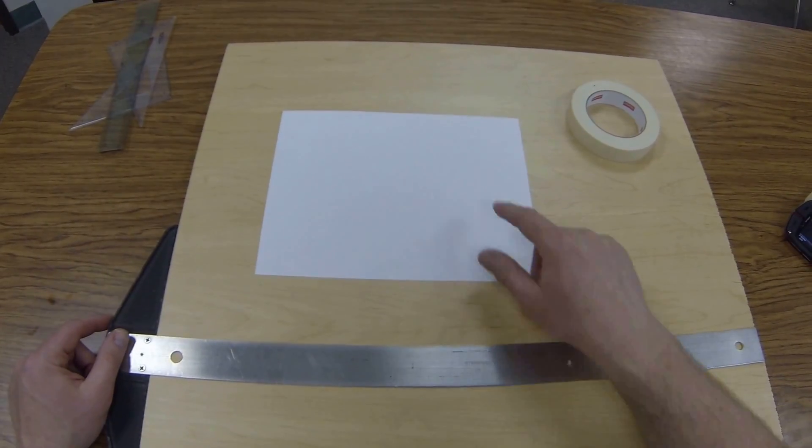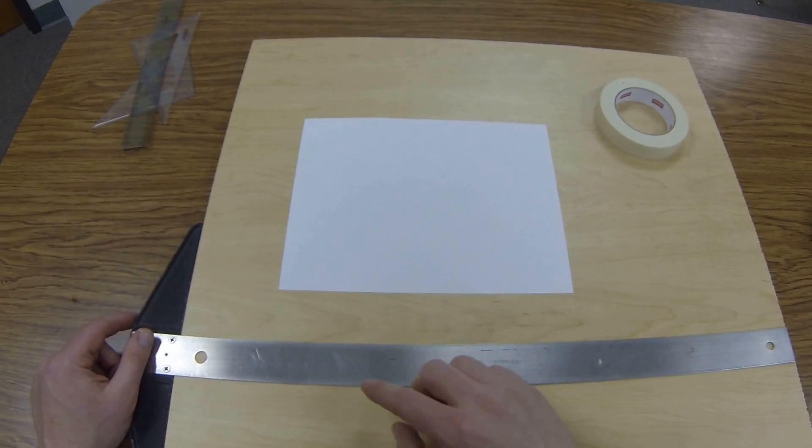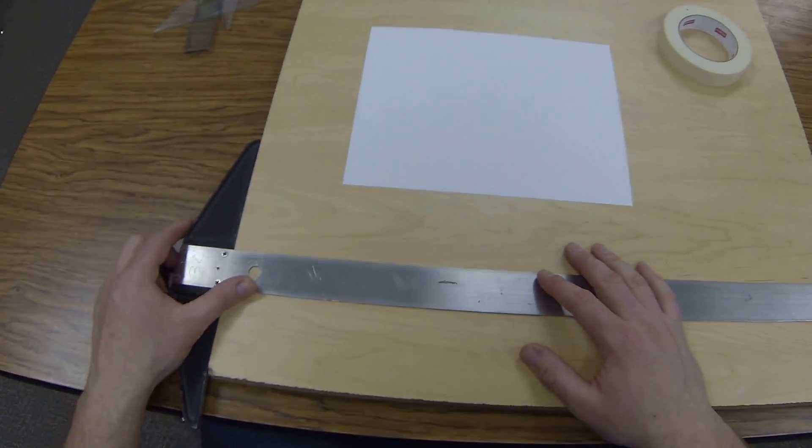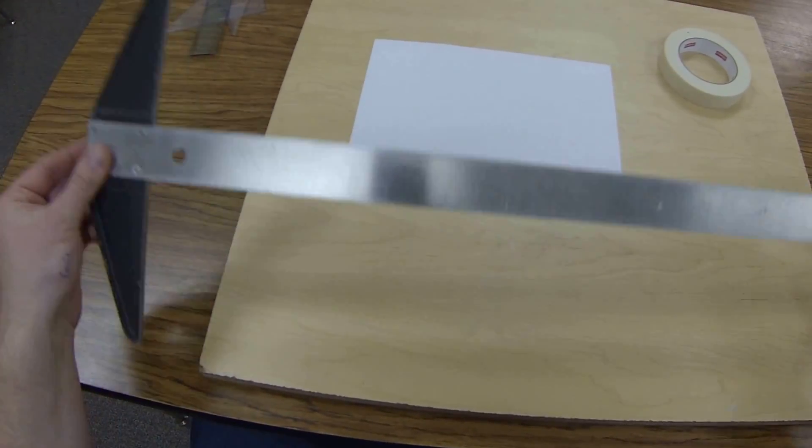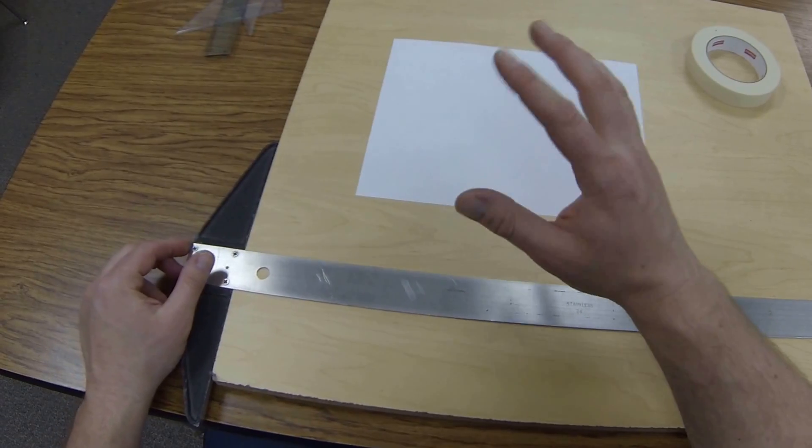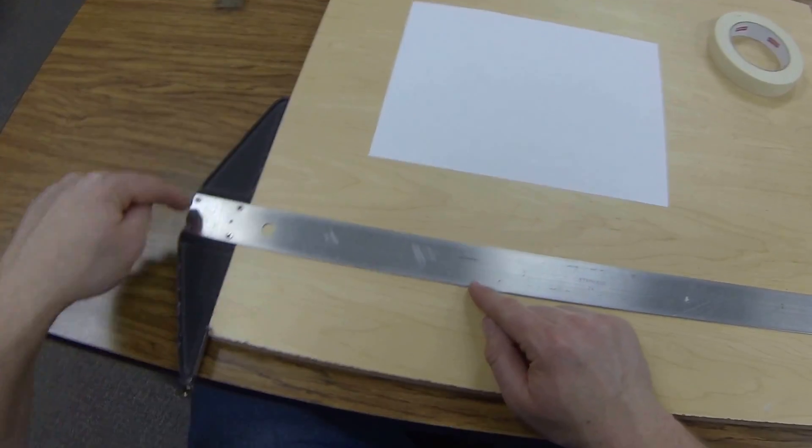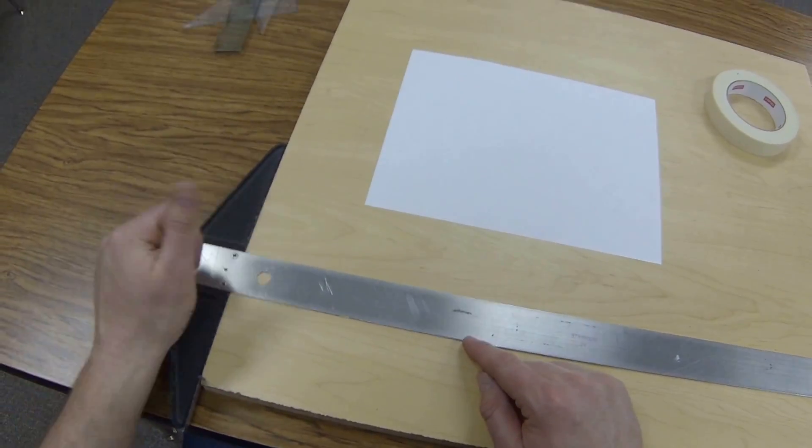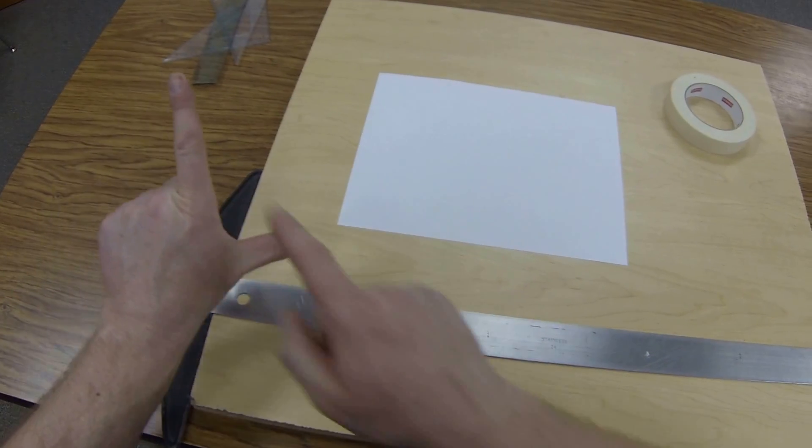All right students, today what we're going to do is actually tape this sheet of paper down to our drafting board. First thing you want to do is have your t-square set up on the proper side. I'm a right-handed person, so the head of the t-square needs to go on my left-hand side.